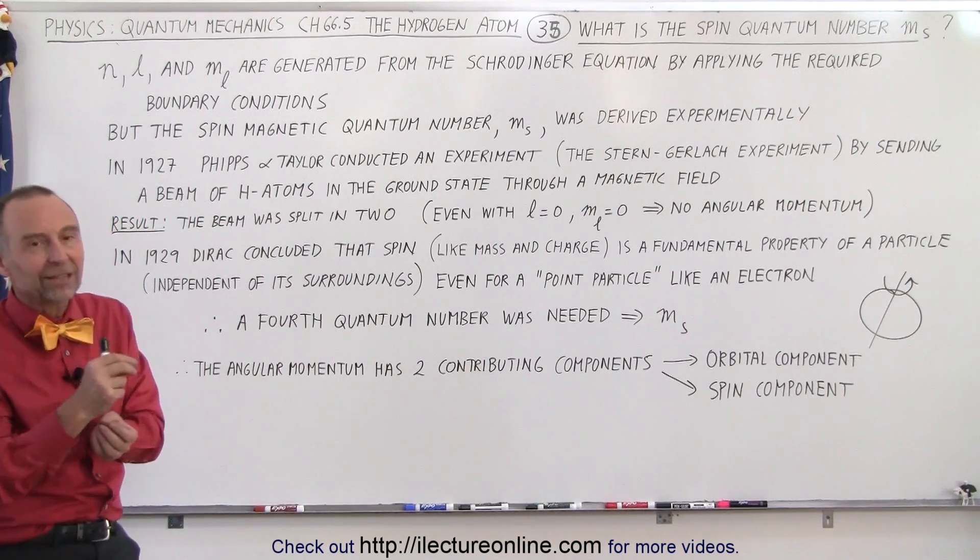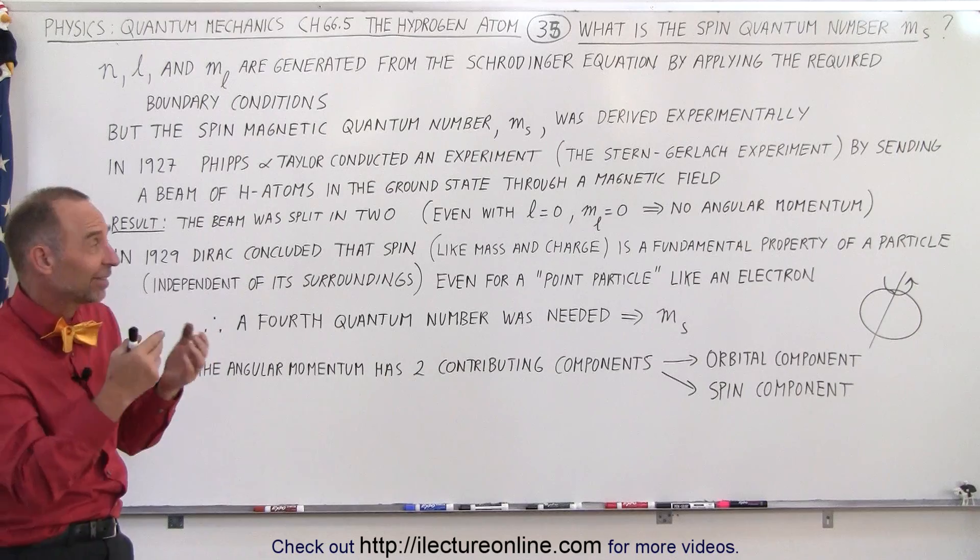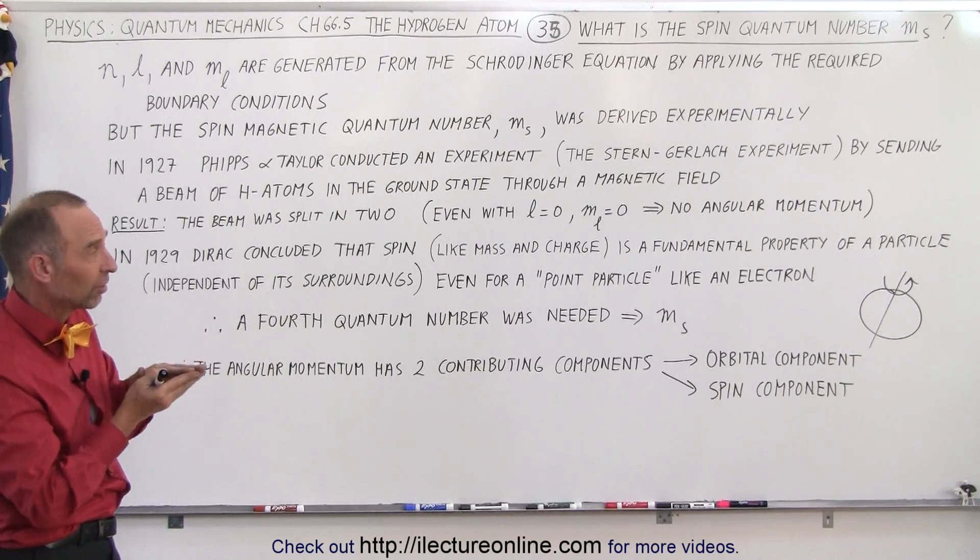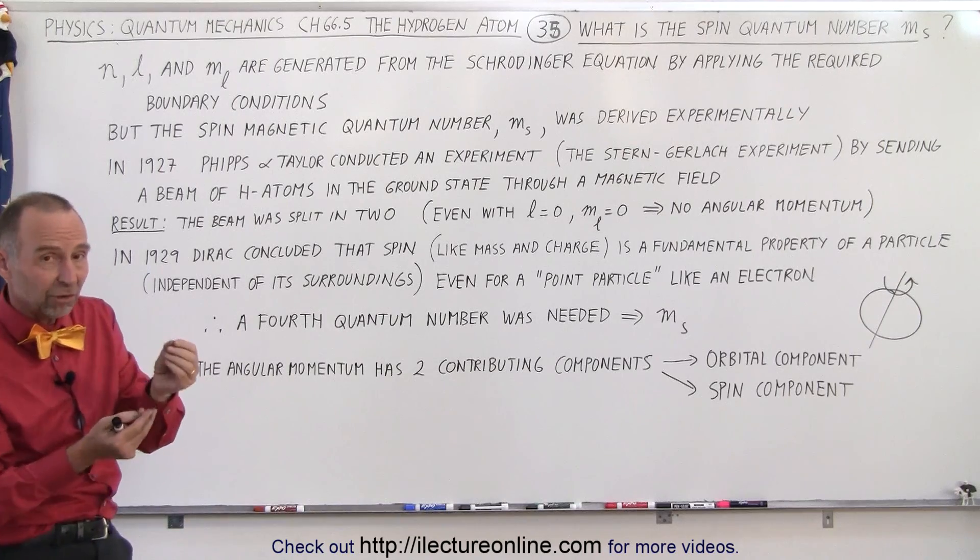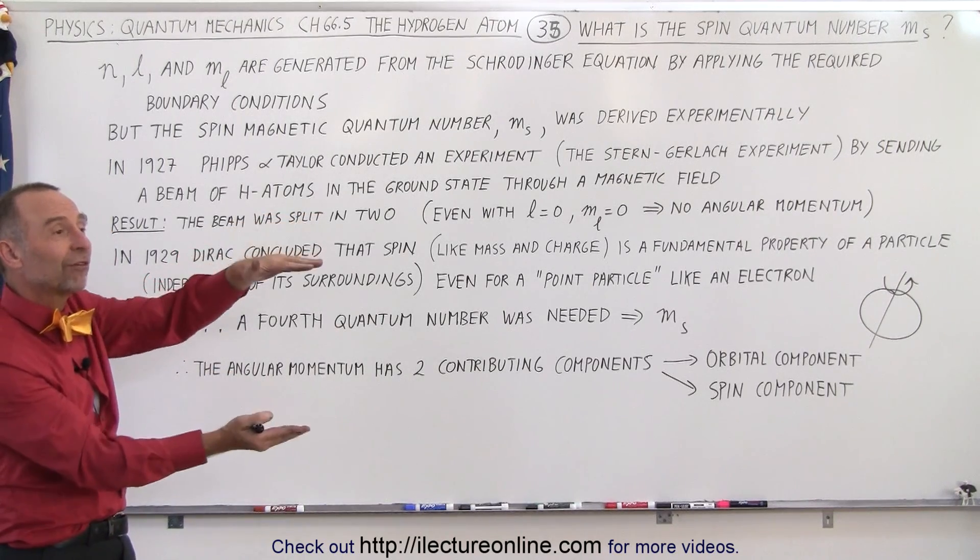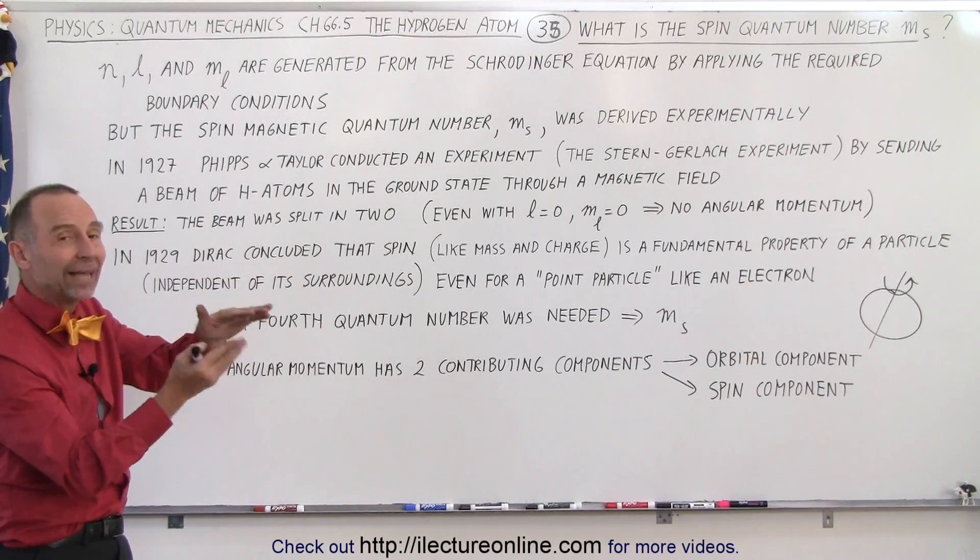But at least, this one did not come from the Schrodinger equation. This came simply from an experiment that showed that when you send hydrogen atoms with electrons in the ground state through a magnetic field, the beam is split,